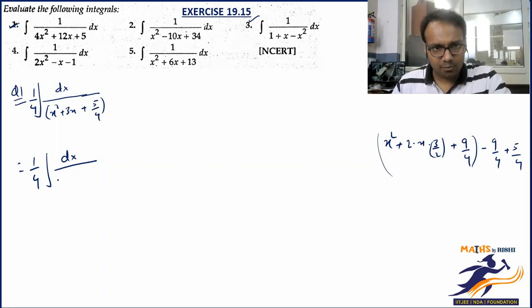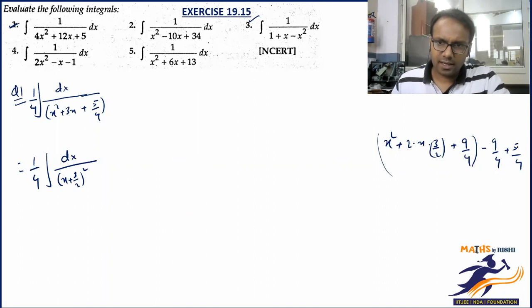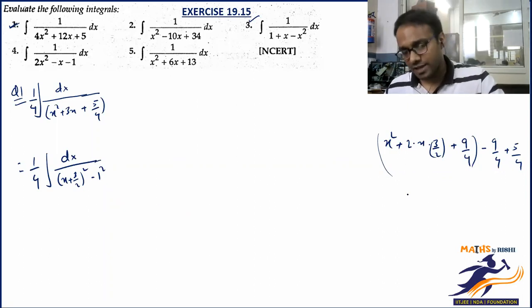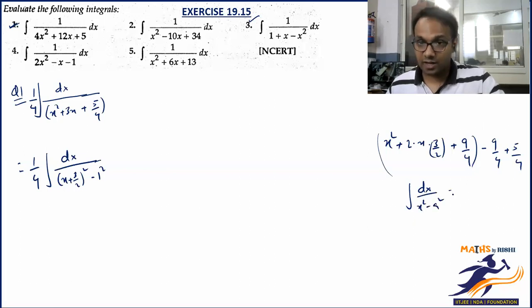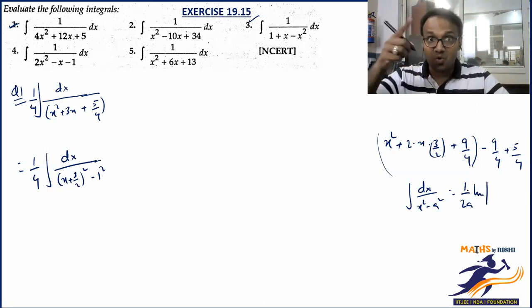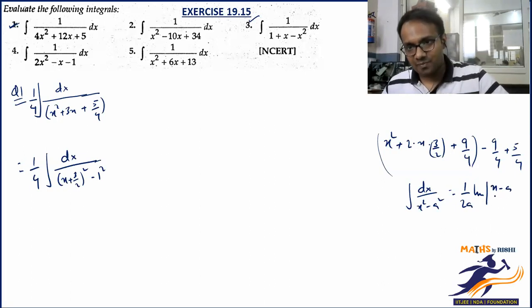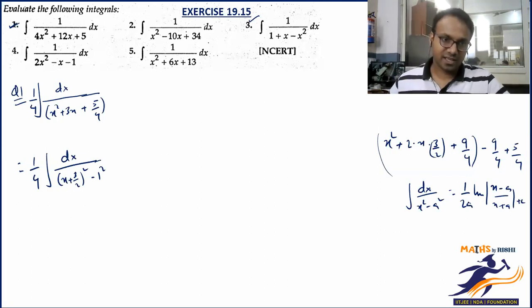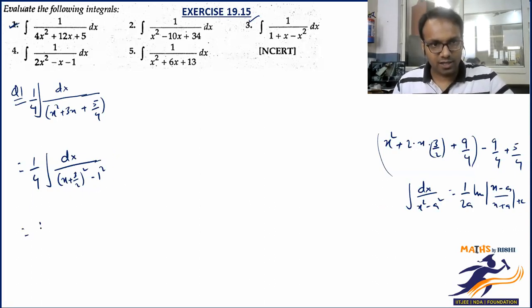If you look carefully, this is (x + 3/2)² whole square. And dealing with the constant: -9/4 + 5/4 = -4/4 = -1. So we have (x + 3/2)² - 1. Now you should recall: what is the integral of dx/(x² - a²)? As I just said, it is (1/2a) · log|(x - a)/(x + a)| when x is positive — the negative term goes on top.